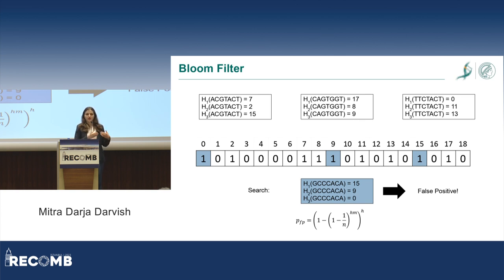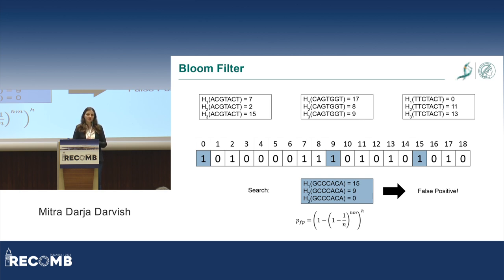In that case, you will think the k-mer has already been inserted in the data structure, giving you a false positive. The number of false positives can actually be estimated.